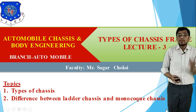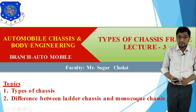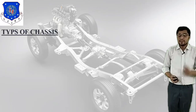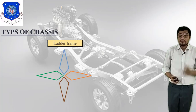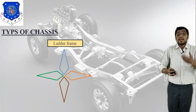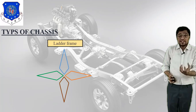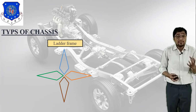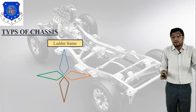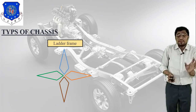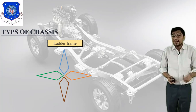We will also discuss the difference between ladder chassis and monocoque chassis, which is very important. We classify different types of chassis because it ultimately depends on size and design, passenger capacity, and passenger load. There are different applications — for example, a bus versus a car — and there are differences in structure and material.